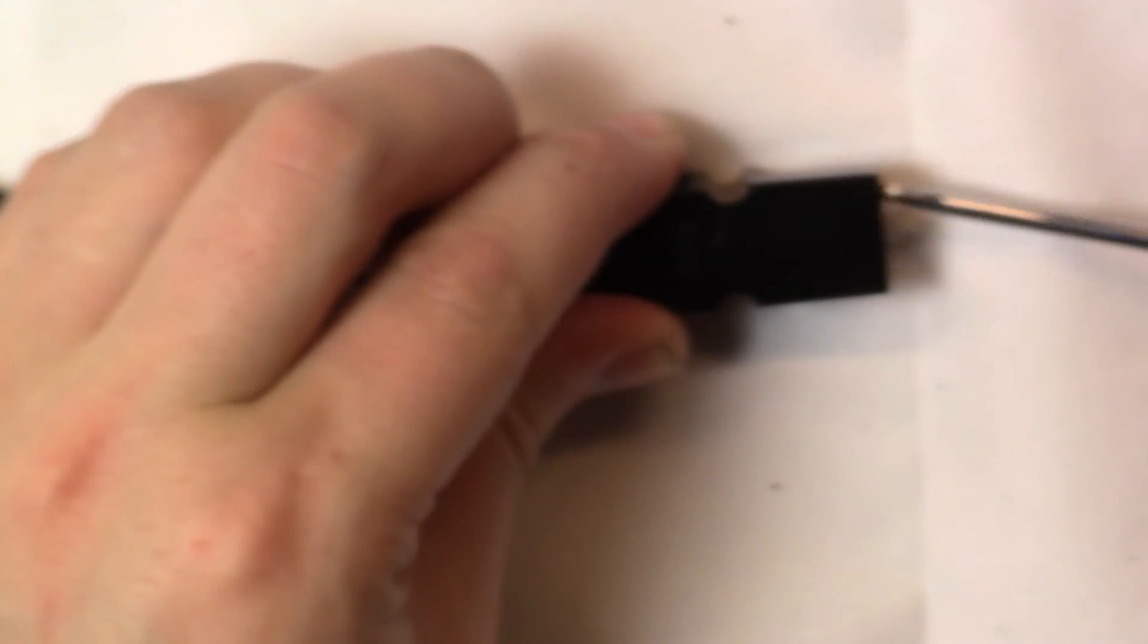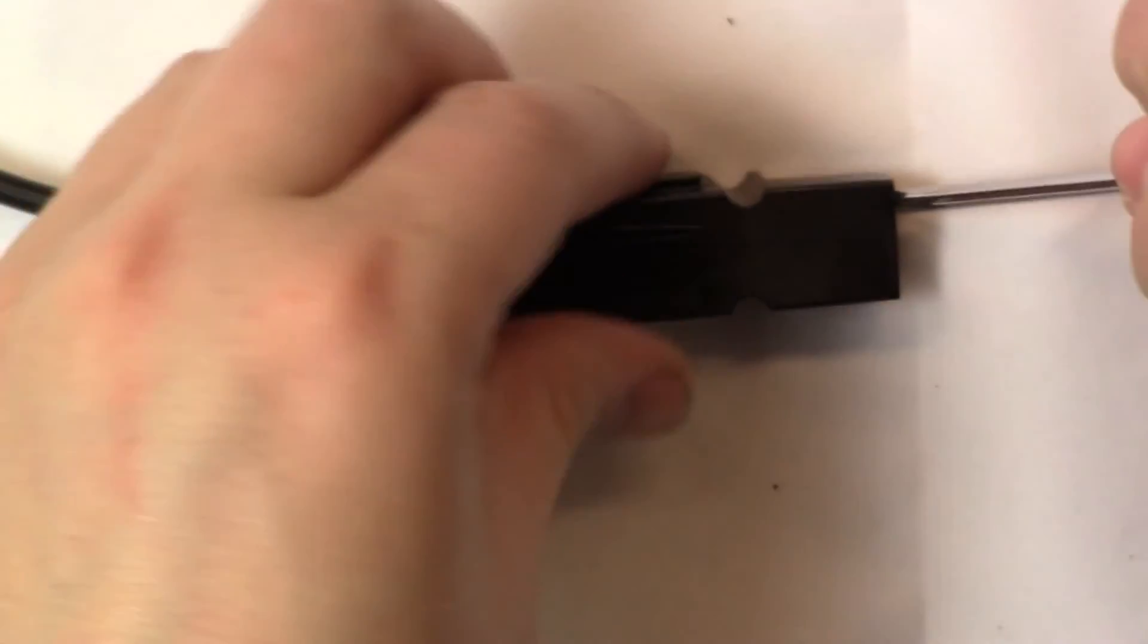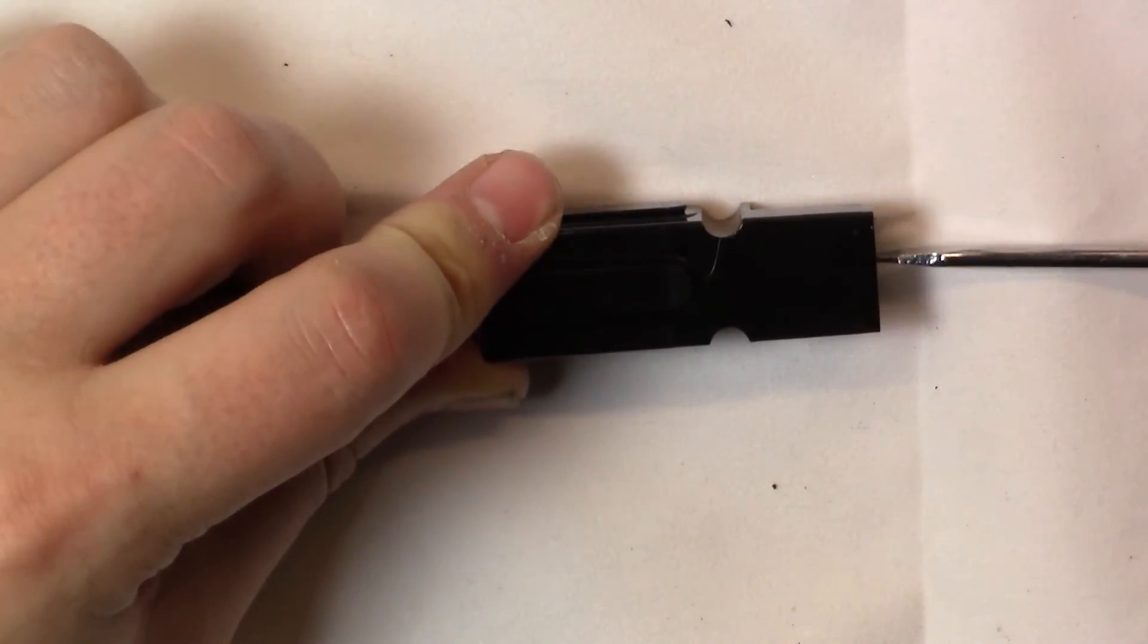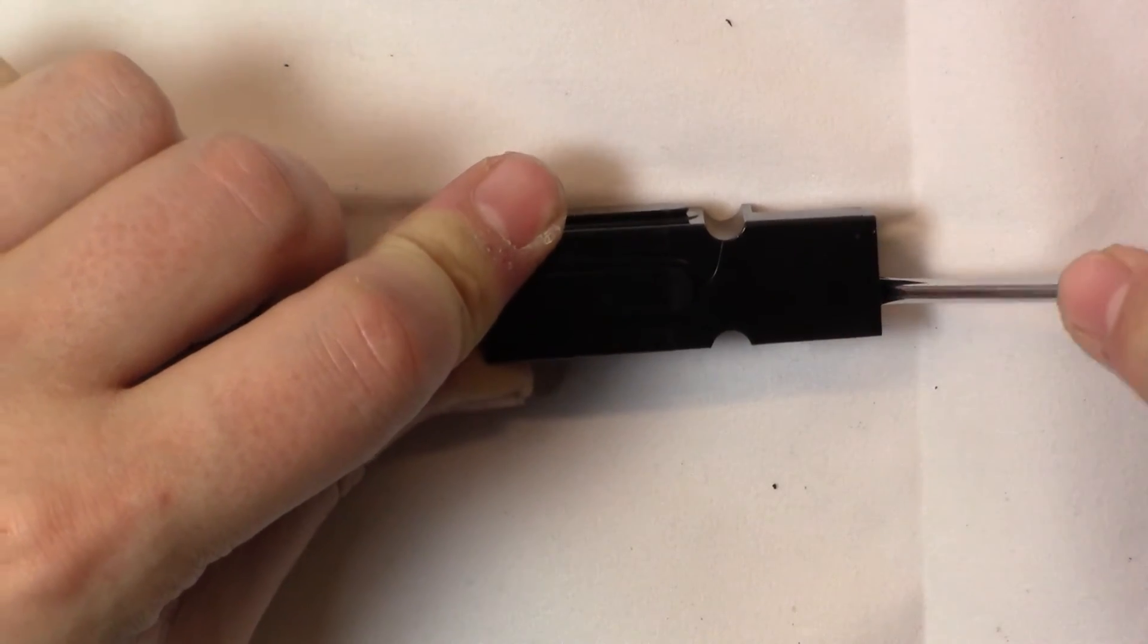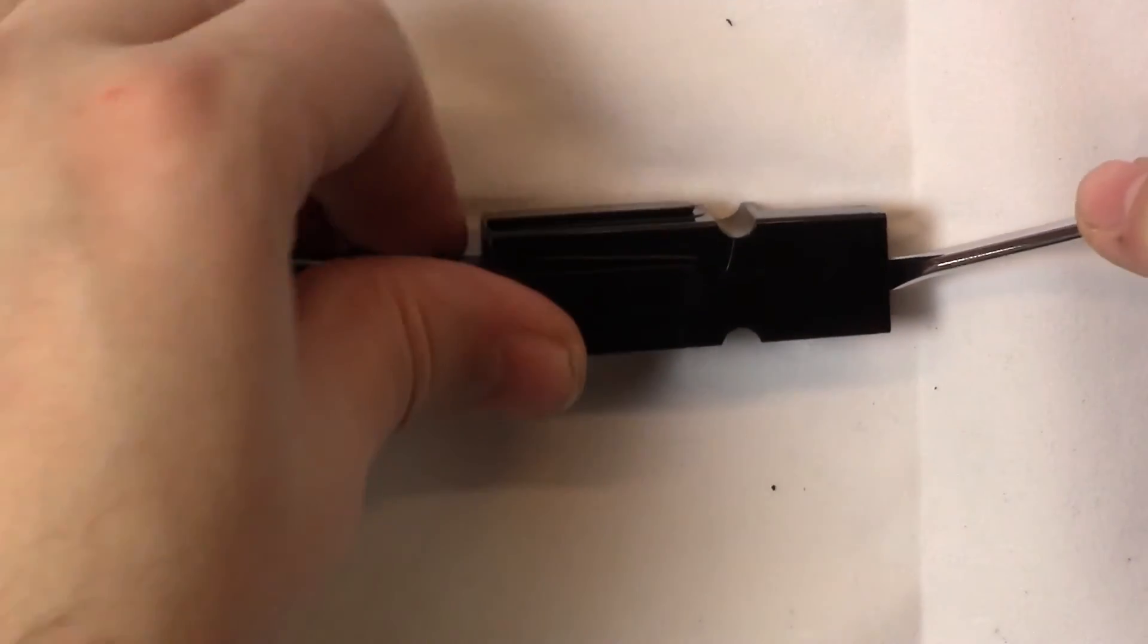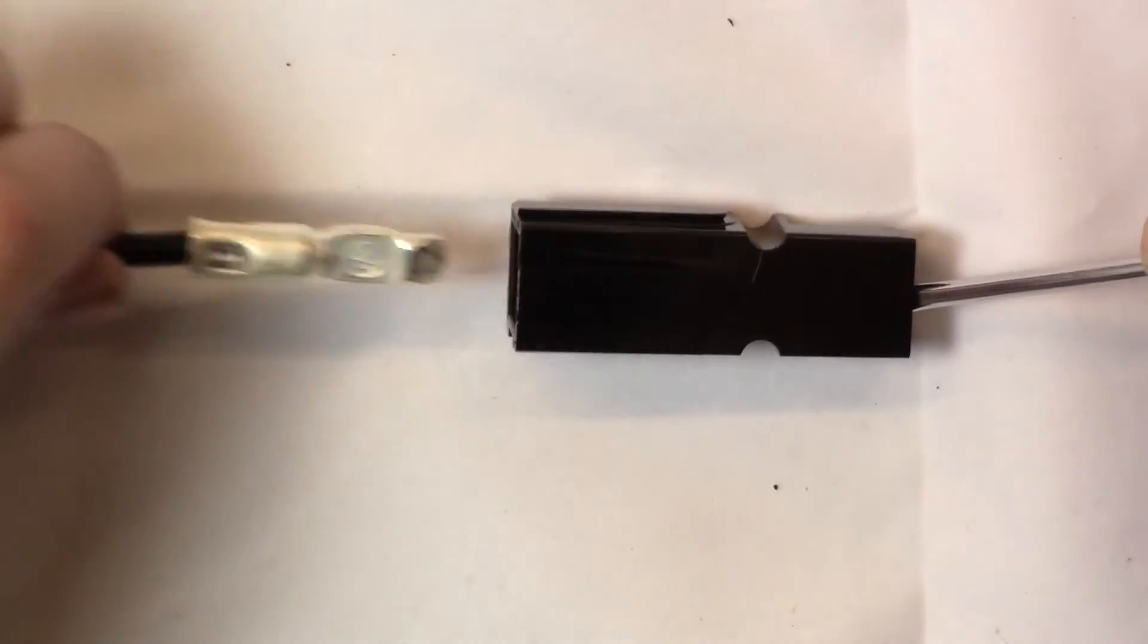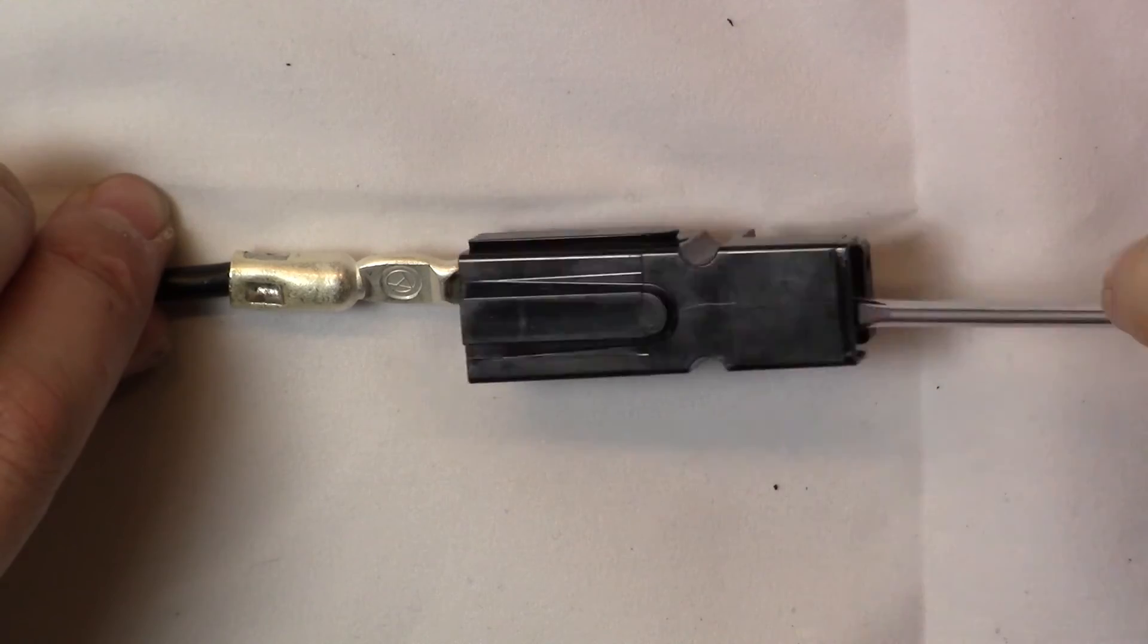To replace the terminal simply use a flat head screwdriver to push the metal tab down to release the terminal and to withdraw it from the rear housing. We have found that it is best to do this as the connector is lying down. And you simply just have to push the metal tab into the ground before pulling on the cable to remove the terminal itself.